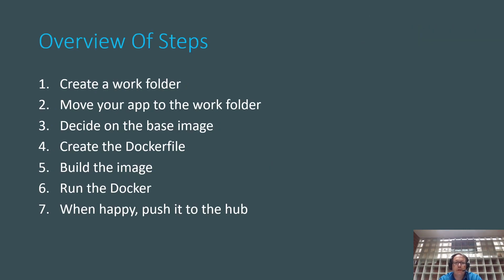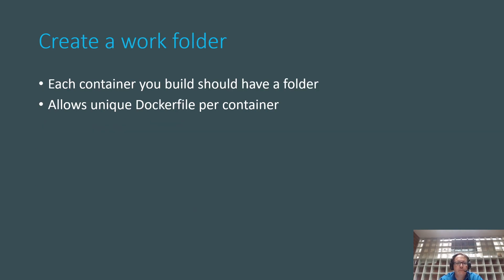Here's the overview of the steps. Create a work folder to do all your Docker creation in — don't try to do this in your main folder where your code currently exists. Move your app to the work folder. You have to decide on the base image, and I'll show you how to do that in this video. We'll create the Docker file, we'll build the image — that takes some time, so the video will pause. We'll run Docker to make sure it works, and when we're all happy, we'll push it up to the Hub. Each container built should have its own folder and its own unique Docker file per folder.